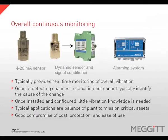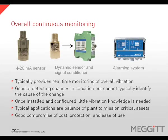Overall continuous monitoring provides real-time monitoring of overall vibration levels. A common output is a 4 to 20 milliamp signal. This method is very good at detecting changes in condition; however, it cannot identify the cause of the change. Once installed, the system can be used effectively with little vibration knowledge. Typical applications range from balance of plant to mission-critical assets, and this approach is a good compromise of cost, protection, and ease of use.